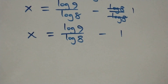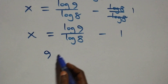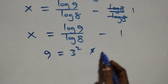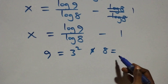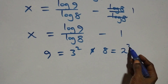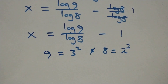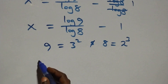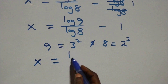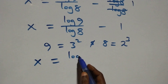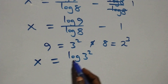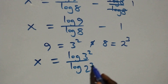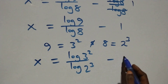From here, we can write 9 as 3 times 3, which is 3 squared, and also 8 as 2 times 2 times 2, which is 2 cubed. Then what we have becomes x equals log(3²) over log(2³), minus 1.